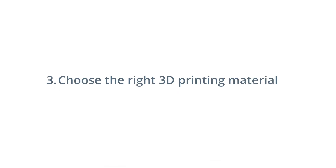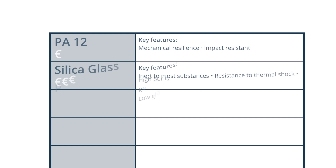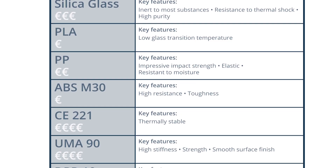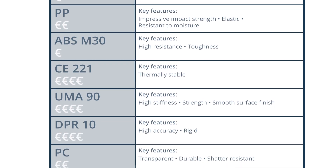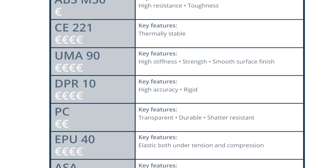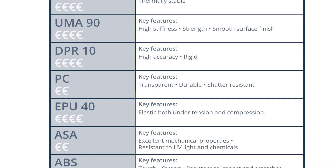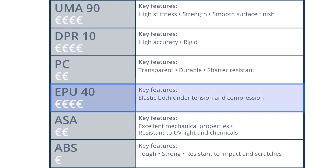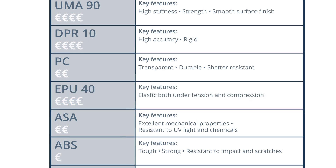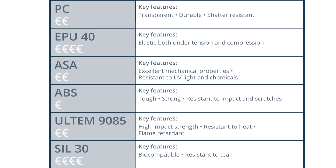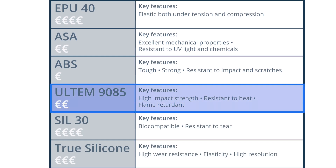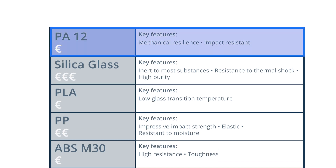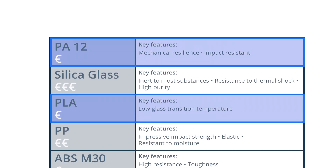3. Choose the right 3D printing material. Select the most suitable material based on your requirements. For example, if the part you are printing is just a visual model, chances are you don't need an expensive material like clip resins used in DLS technology. Materials with good performance — strong, heat-resistant, etc. — like Ultem are more expensive than widely used materials like PA12 or PLA.